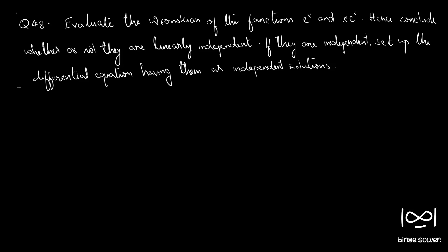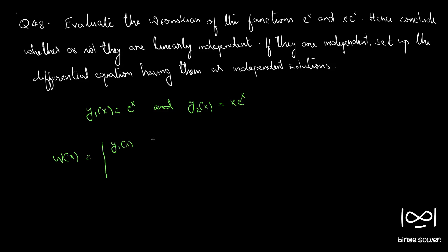We are given two functions: y1(x) = e^x and y2(x) = xe^x. To check whether they are linearly independent, we take the Wronskian W(x). If W(x) = 0 for all x, the functions are linearly dependent. If W(x) ≠ 0, we can say that the functions are linearly independent.